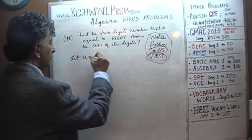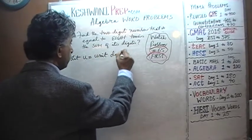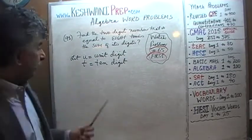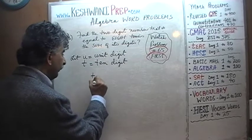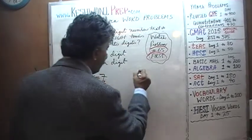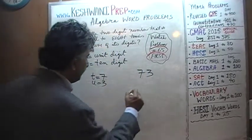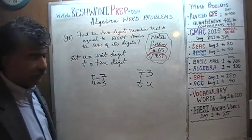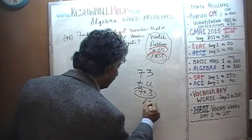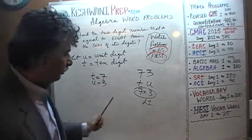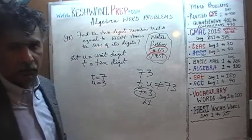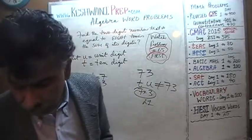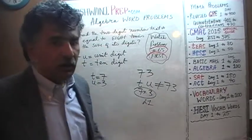If we were to use U for unit digit and T for tens digit, and if T happens to be 7 and U happens to be 3, the question is: how do we represent 73? Do we represent it as simply TU? The answer is no, because TU in the language of algebra represents 7 times 3, which is 21 — it does not represent 73. So how do we represent 73 using T and U?